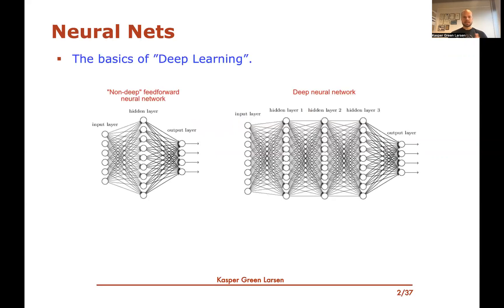So first of all, this is just a slide that was also in the previous video. Neural nets really form what we call the basics of deep learning, and they're typically visualized like this: there's some input layer, there's an output layer, and then we have these hidden layers where there are so-called neurons with edges going between all the neurons. We'll try to say more in this video about what all these pieces are and how to evaluate such a neural network.